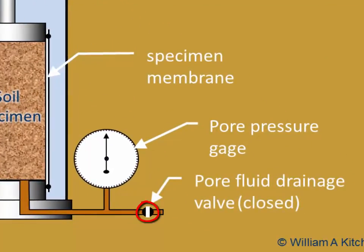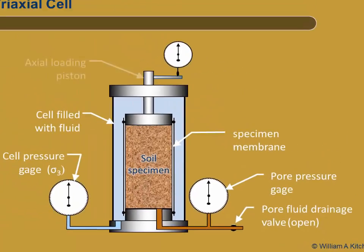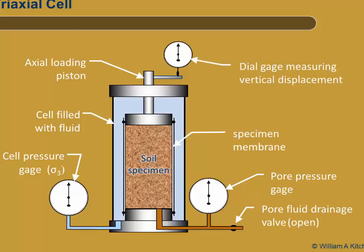There is a valve which controls drainage within the specimen. The valve can either be closed, thereby preventing drainage, or open, which allows for drainage. A loading piston on top of the cell allows an axial force to be applied to the soil specimen. A dial gauge attached to the top of the specimen lets us measure the vertical deformation.